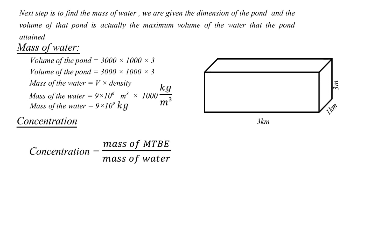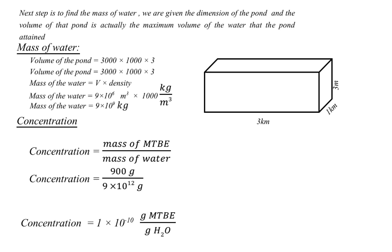Using our formula for concentration — mass of MTBE divided by mass of water — and substituting the values, we get: concentration = 900 / (9 × 10¹²) = 1 × 10⁻¹⁰ grams of MTBE (solute) per gram of H₂O (solvent). This is the final answer.